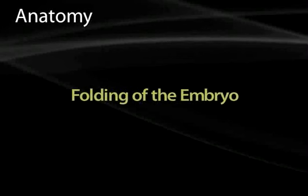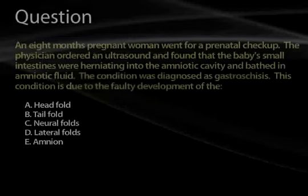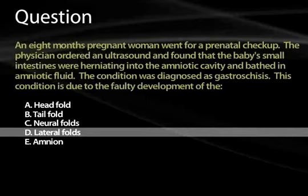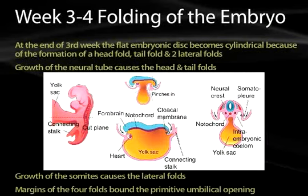Welcome back to segment five of the online anatomy portion of the Falcon review series. Let's move into folding and take the embryo to a three-dimensional structure from two dimensions. We'll start with a clinical question: an eight-month pregnant woman had a prenatal ultrasound showing the baby's small intestines herniating into the amniotic cavity, bathed in amniotic fluid. The condition was diagnosed as gastroschisis, which is due to faulty development of the lateral folds.